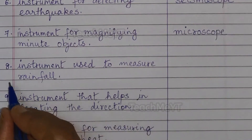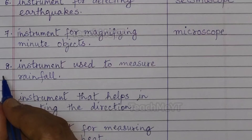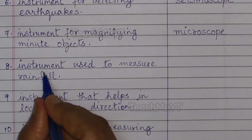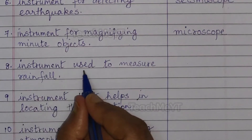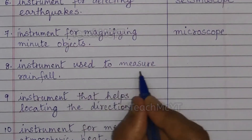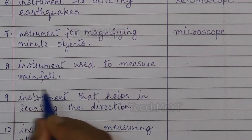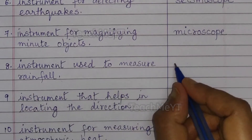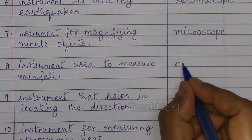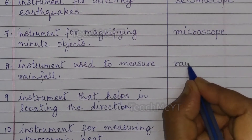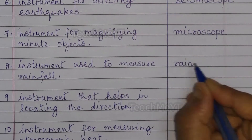Number 8. Instrument used to measure rainfall is a rain gauge.